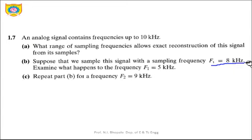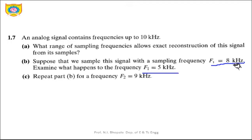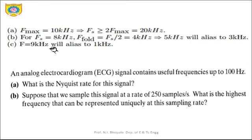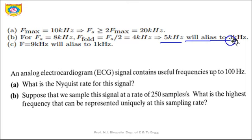For the second part, suppose the signal is sampled at FS = 8 kHz. Examine what happens to frequency f1 = 5 kHz. The fold frequency is FS/2 = 4 kHz, which is less than f1 = 5 kHz. Therefore aliasing will occur, and the alias frequency will appear at FS − f1 = 8 − 5 = 3 kilohertz.